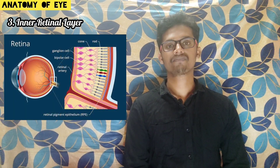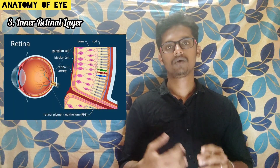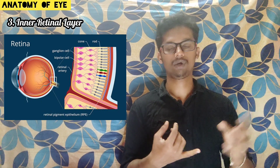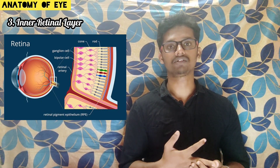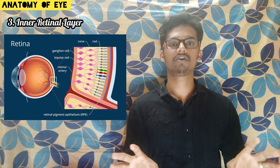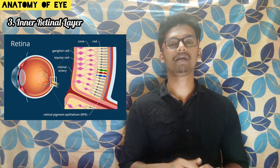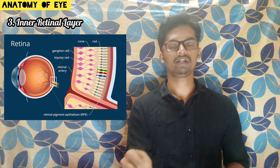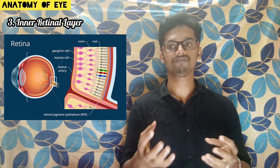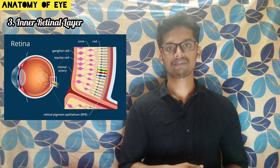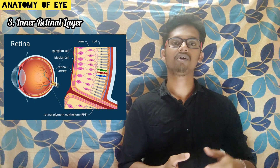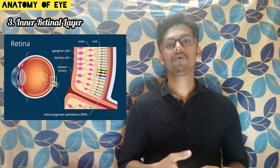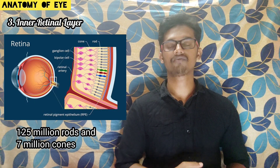The third layer is the inner layer — the retina. In the retina, there are two types of cells: rod cells and cone cells. Rod cells are responsible for black and white vision and are mainly involved in night vision. At night, the vision is called rod vision because only rod cells are active at that time. Cone cells are responsible for vision of different colors — red, blue, green, yellow, violet — so cone cells are responsible for day vision. Our retinal layer contains 125 million rod cells and 7 million cone cells.